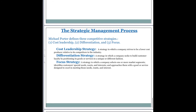When we talk about the strategic management process, we discuss Michael Porter, a Harvard Business School lecturer, who says there are three types of strategies to keep in mind. First is the cost leadership strategy — a strategy in which a company strives to be a lower-cost producer relative to its competitors in the industry. If your cost of production is lower, you have a bigger margin of profit in your sales.